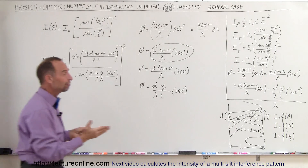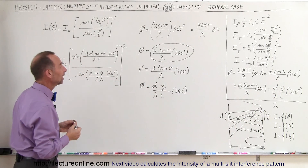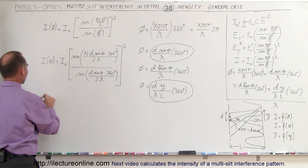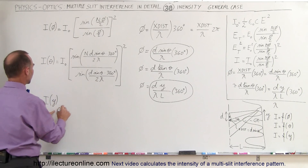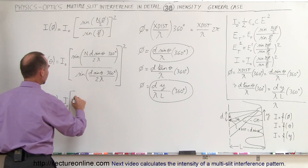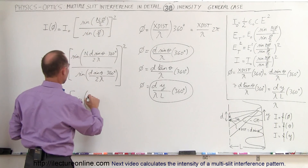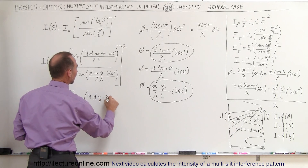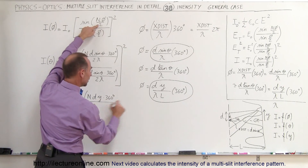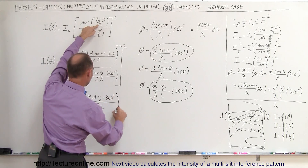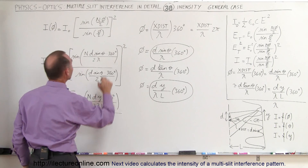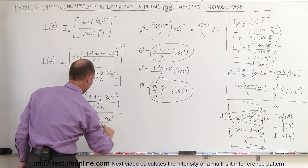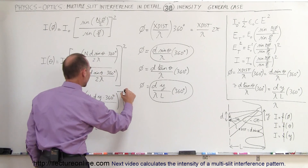If instead you want the intensity in terms of how far up the screen from the central maximum you want to evaluate, you substitute the Y-based expression for the phase angle. Intensity as a function of Y equals I-naught times the sine of N times d times Y times 360 degrees divided by 2 times lambda times L, all divided by the sine of d times Y times 360 degrees divided by 2 times lambda times L, and then close the brackets and square the whole quantity.